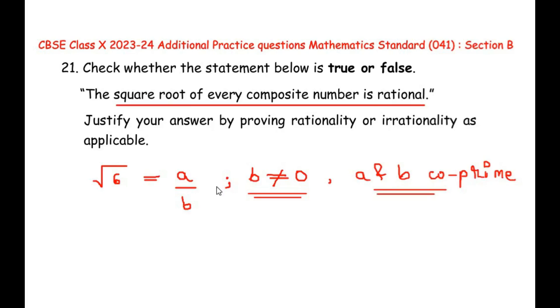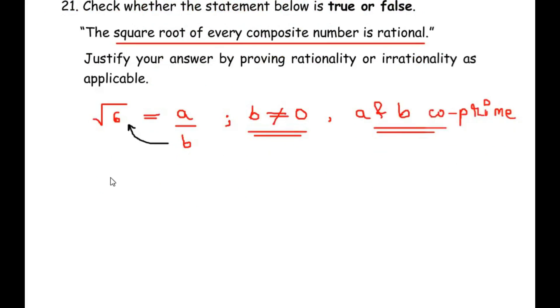Let us proceed by solving square root of 6 equals a over b. I am going to take b on the other side, so I get b times square root of 6 equals a. Next, I am going to square both sides. So this square gets distributed to b as well as the square root, so we get b squared and square root of 6 squared equals a squared.